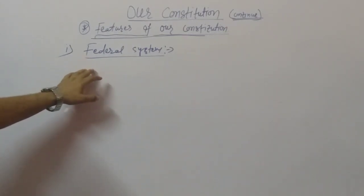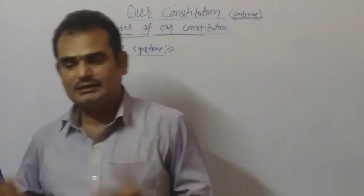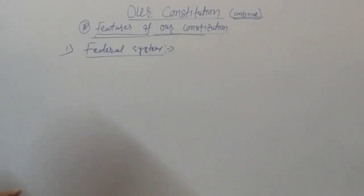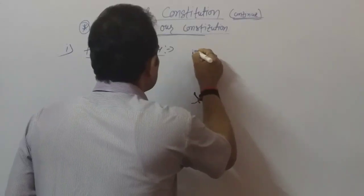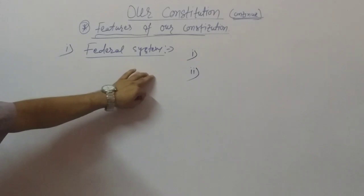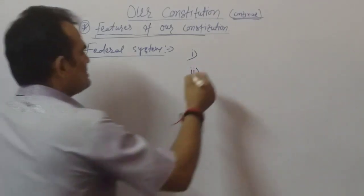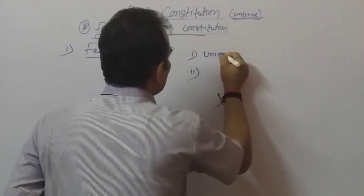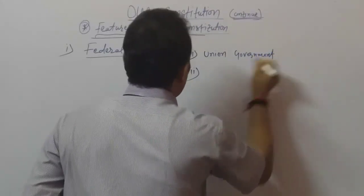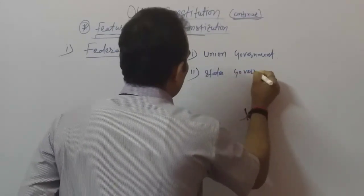In the federal form of government there are two sets of government. Number one is the union government, and the second one is the state government. This is the federal government structure.